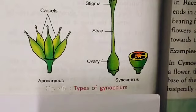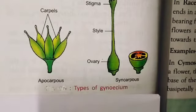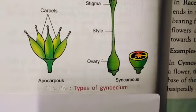Besides this, we can also divide the gynoecium into three types based on the number of carpels. Based on the number of carpels, we divide the gynoecium into three types: monocarpellary, bicarpellary, and polycarpellary.